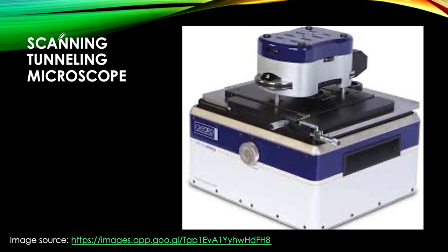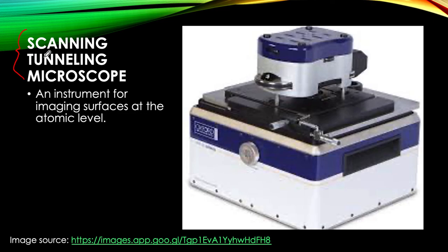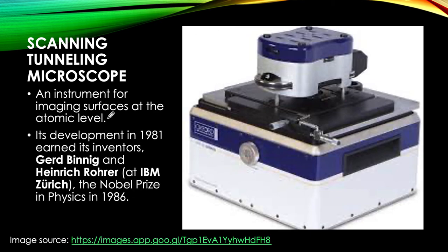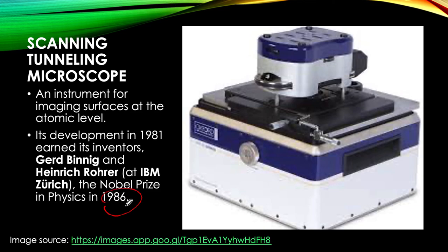Last is the scanning tunneling microscope, which uses a probe — as discussed in earlier videos. This is an instrument for imaging surfaces at the atomic level. Its development in 1981 earned its inventors, Gerd Binnig and Heinrich Röhrer, who were both working at IBM in Zurich, Switzerland, the Nobel Prize in Physics in 1986.